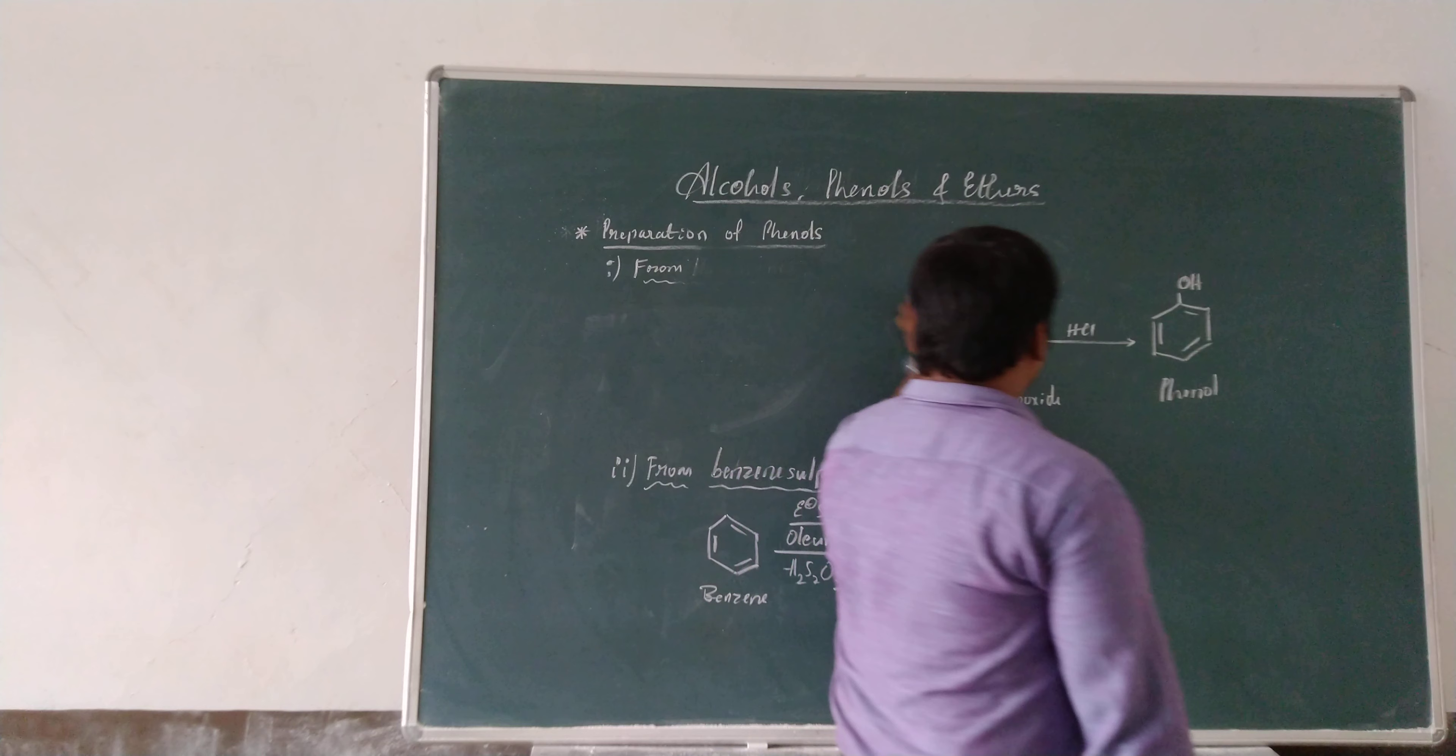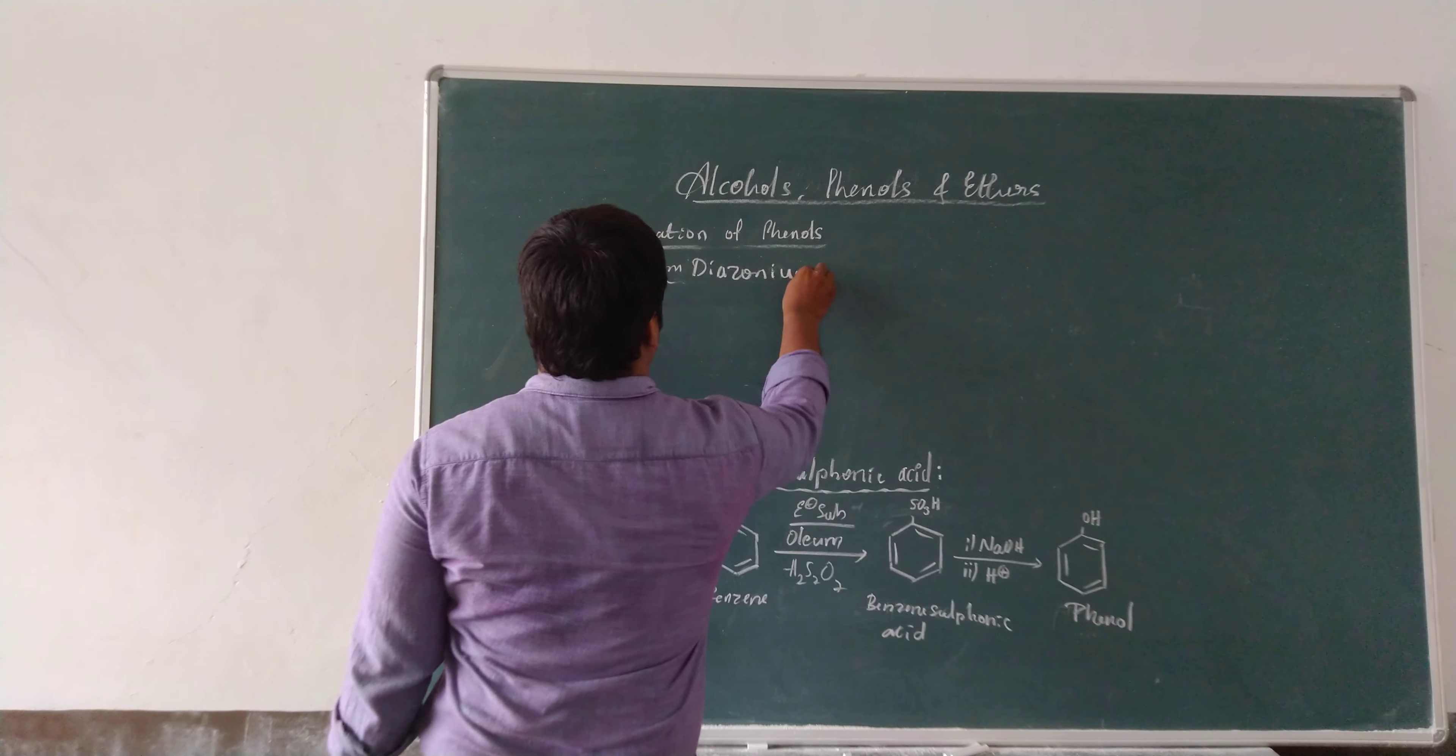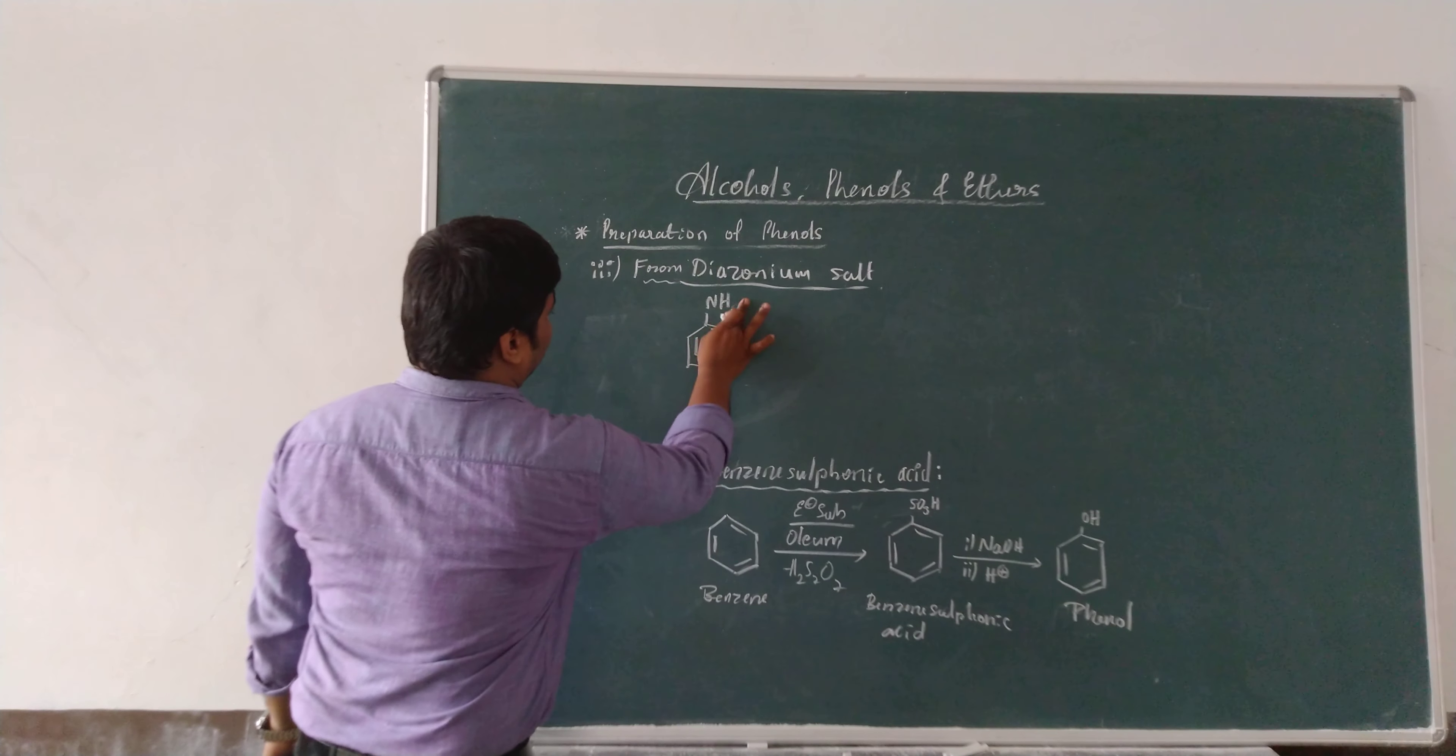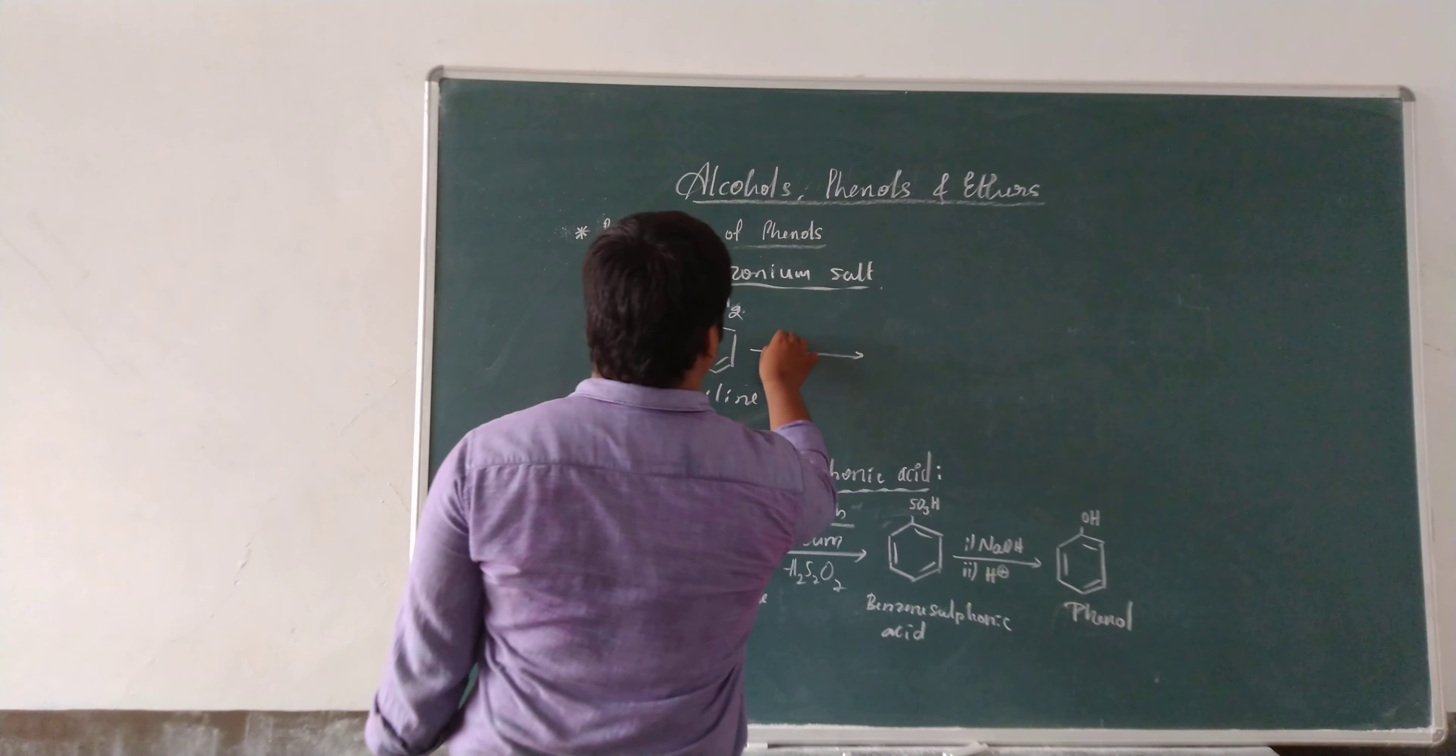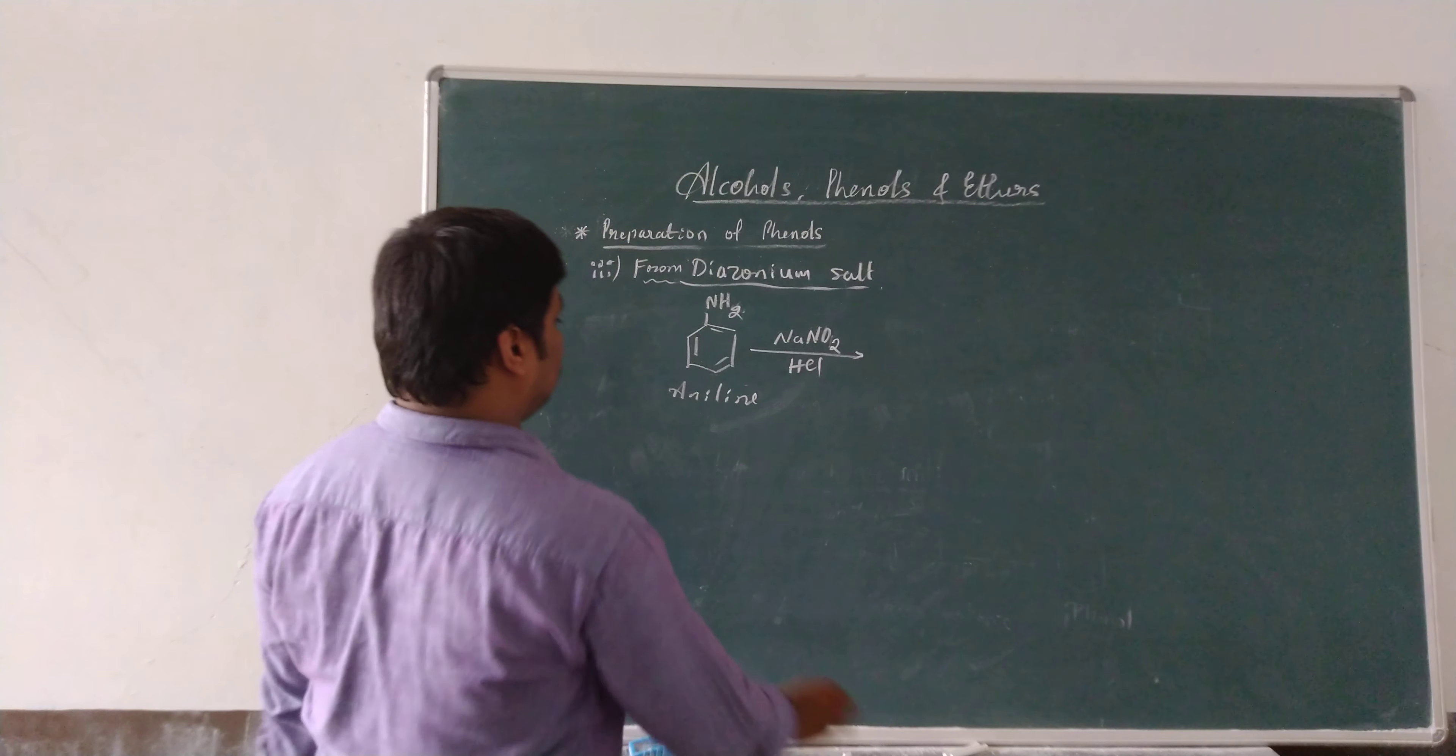Next we move on to another method. It is the third method. The third method of preparation of phenol is from diazonium salt or aniline. How to prepare diazonium salt? The primary aromatic amine, it is primary aromatic amine is nothing but aniline. Primary aromatic amine, aniline. Aniline is made to react with sodium nitrite in presence of HCl.